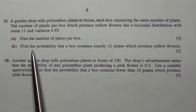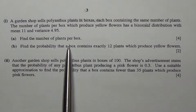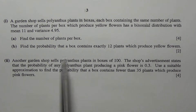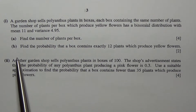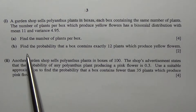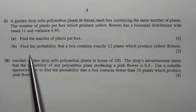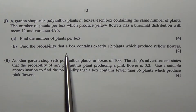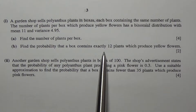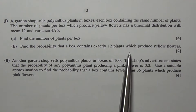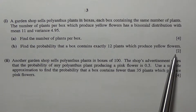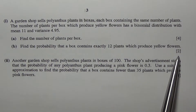Part A: find the number of plants per box — 4 marks. Part B: find the probability that a box contains exactly 12 plants which produce yellow flowers — 2 marks.